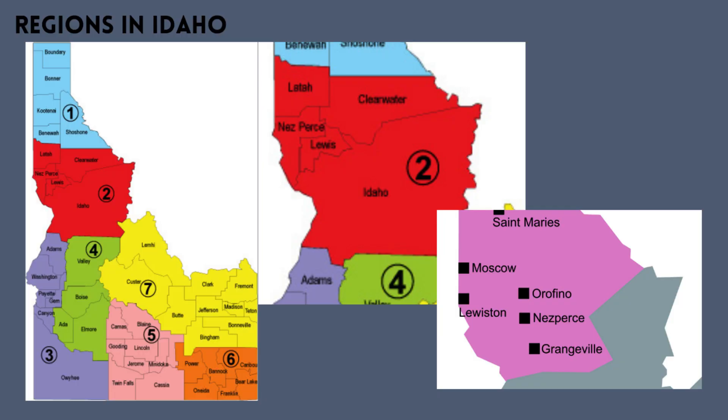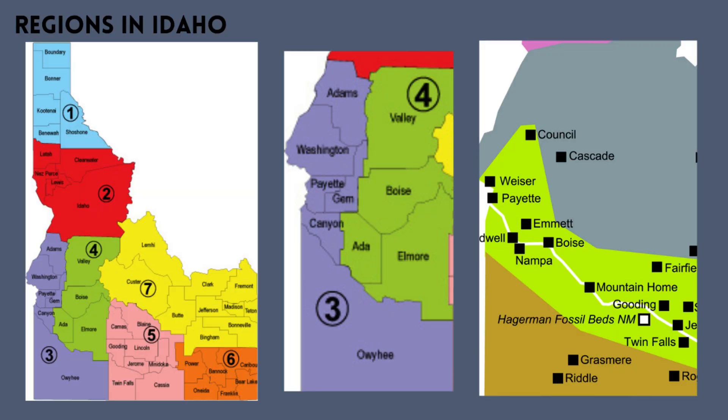Next we'll move to the north central Region 2, which encompasses Grangeville, Moscow, Lewiston, and the Riggins area. This region has 169 sunny days per year, 22 inches of rain per year, 116 days of precipitation, an average July high of 82.7 degrees, an average January low of 25.8 degrees, and 42.8 inches of snowfall per year.